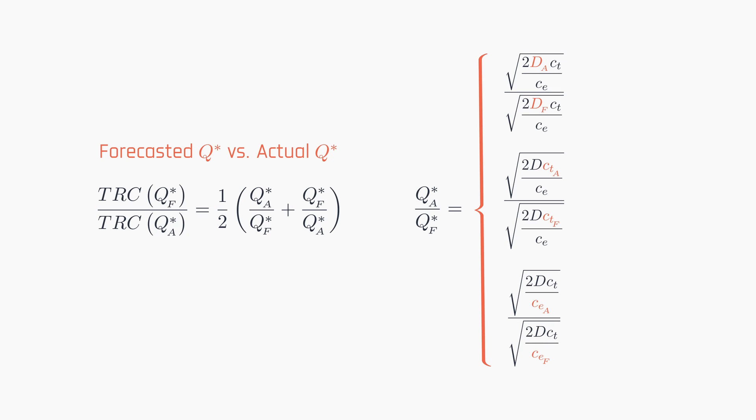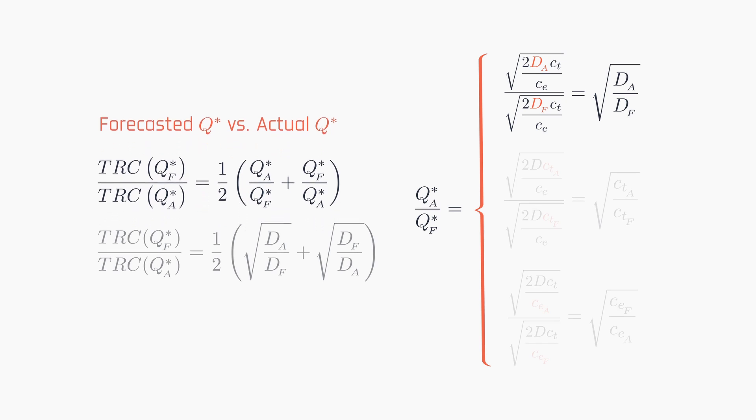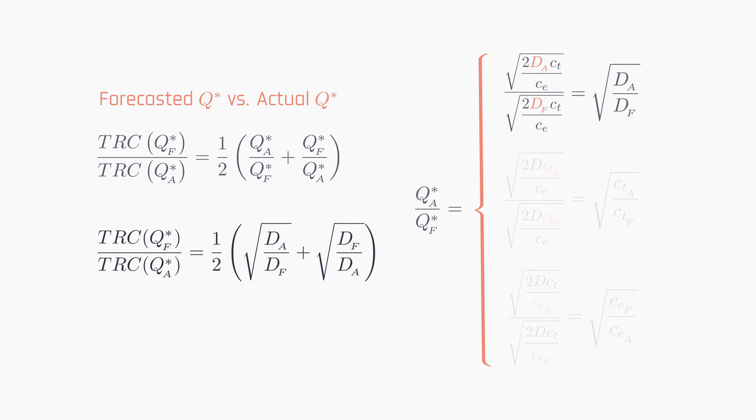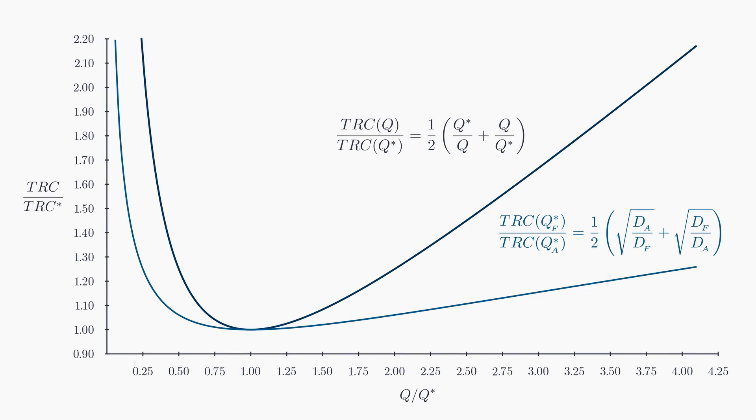Given that we're applying the square root formula of the EOQ, the ratio of the optimal quantities simplifies to the square root of the ratio of the actual and forecasted parameters, thanks to fraction cancellation. For example, if errors occurred in estimating annual demand, the TRC sensitivity would be represented as follows.